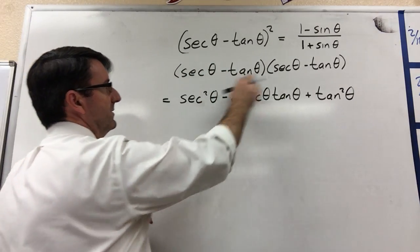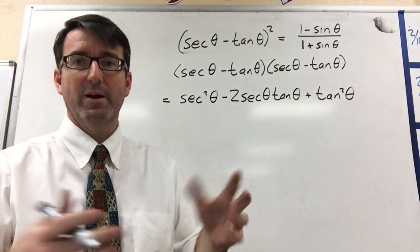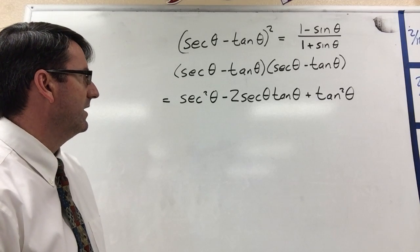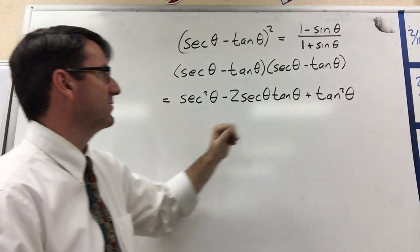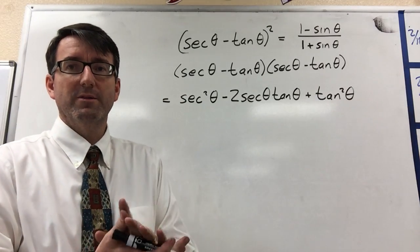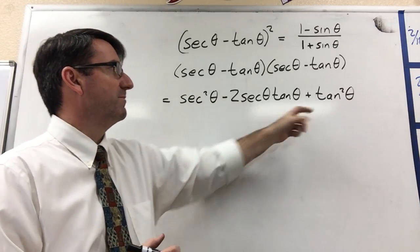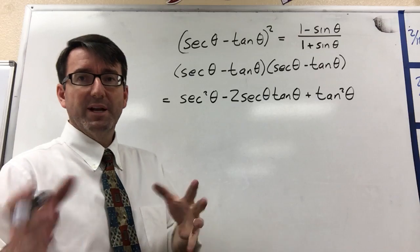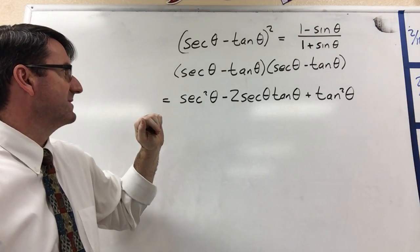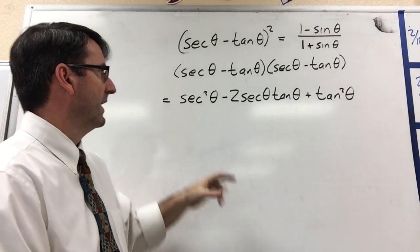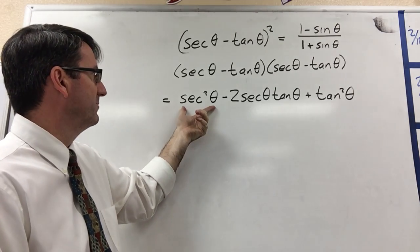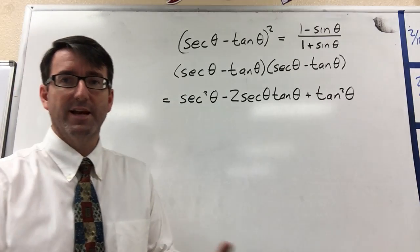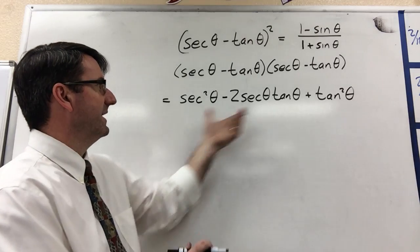So this is equal to secant squared theta minus 2 secant theta tangent theta plus tangent squared theta — we've just expanded out this binomial. Now we see secant squared and tangent squared, and so the first thing I think of is: we've got a Pythagorean identity that says secant squared theta equals tangent squared theta plus one. But if we replace secant squared with tangent squared plus one, it's not going to help us much, because we're just going to end up with two tangent squared and then an extra one.